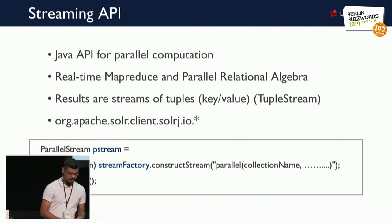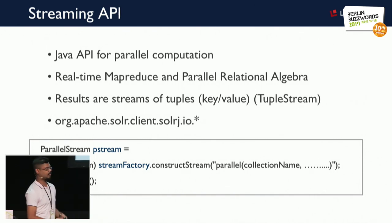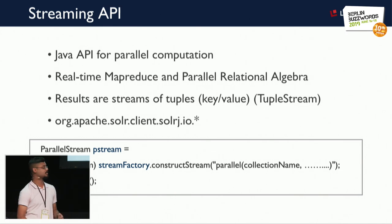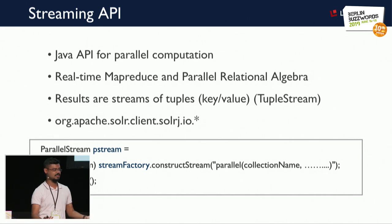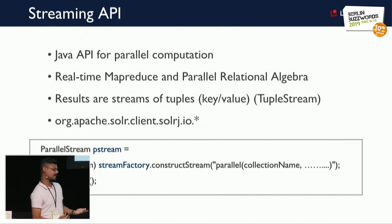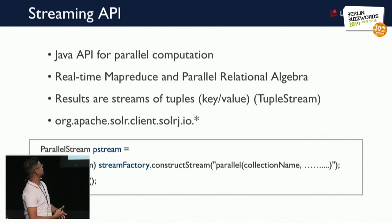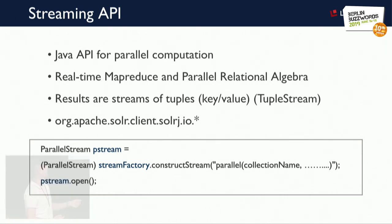Starting with the Streaming API, it's a Java API available to perform real-time MapReduce and relational algebraic operations. You create streaming objects — for example, a parallel stream — and invoke certain APIs to get a stream of tuples. A tuple is a key-value pair, a tuple stream object. All the relevant streaming APIs and objects are available in the source code package SolrJ.io.